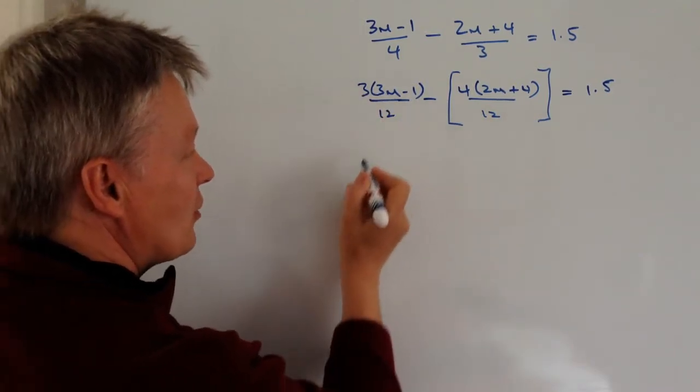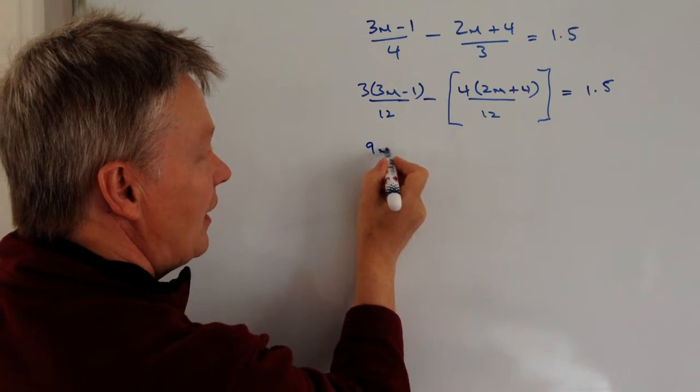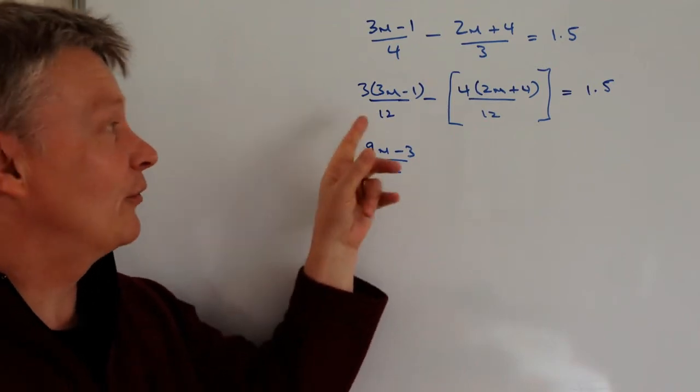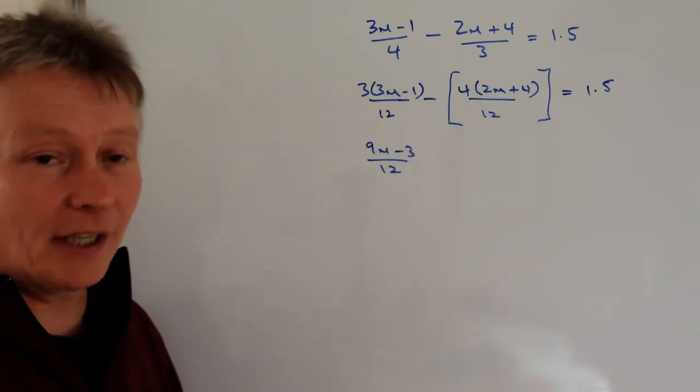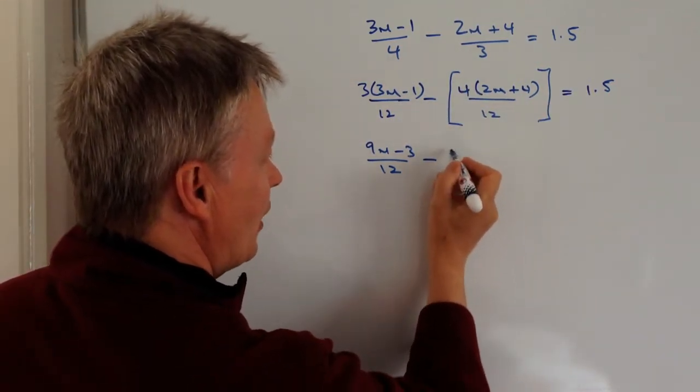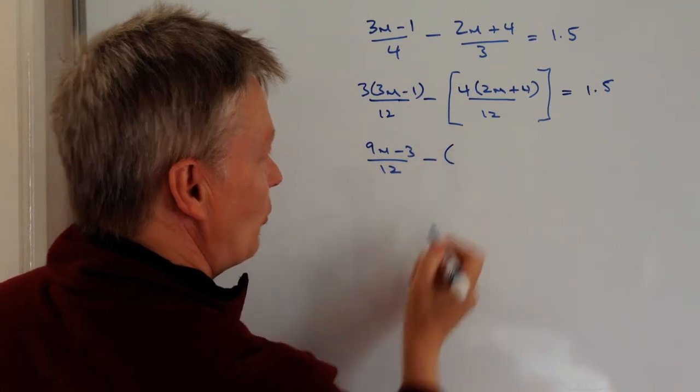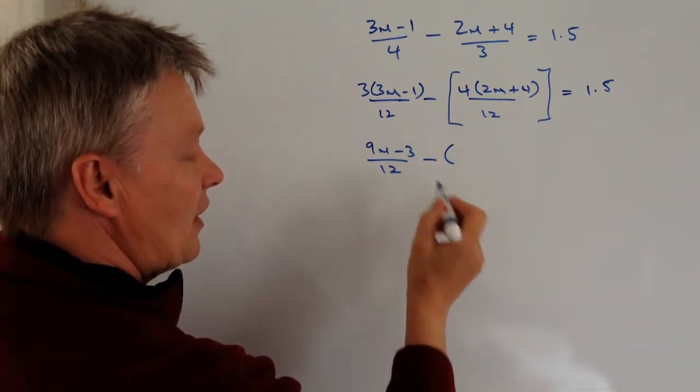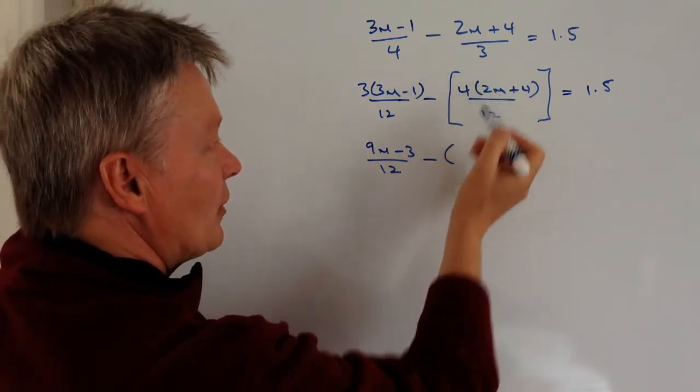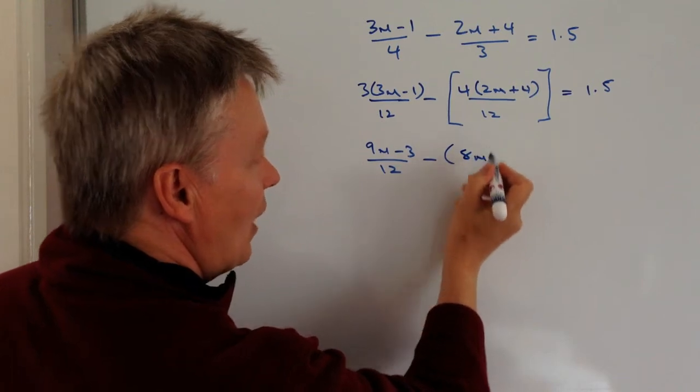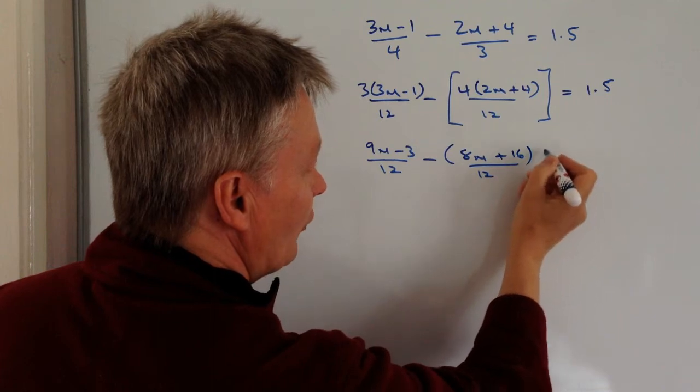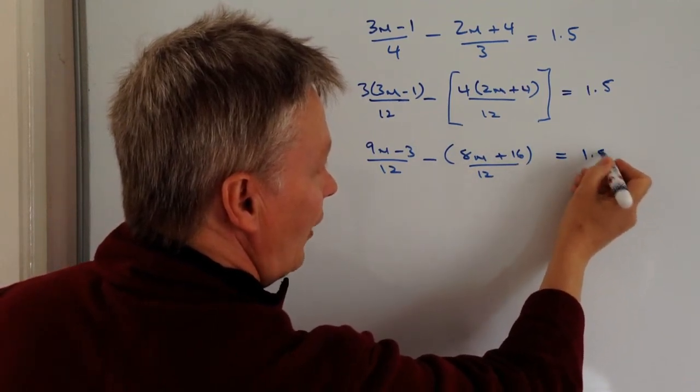I've got 3 times 3m, well that's going to be 9m minus 3 over 12, because 3 times 3m is 9m, and 3 times minus 1 is minus 3, and that's going to be minus. Now this time, I'm going to swap those little brackets over, but I'm going to change it to a smaller bracket, because I want to make sure that I still remember I've got this negative in here. 4 times 2m is going to be 8m, and 4 times 4 is plus 16, that's again over 12, and that equals 1.5.